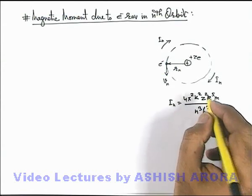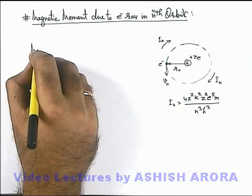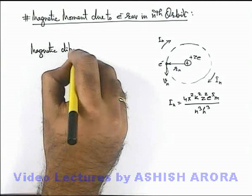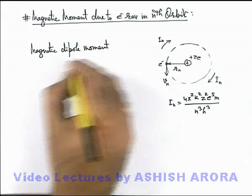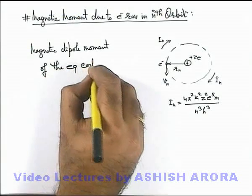And if a current is flowing in an equivalent coil of radius r-n, we can directly write the magnetic dipole moment, or only magnetic moment, which can also be termed magnetic dipole moment or magnetic moment of the equivalent coil.